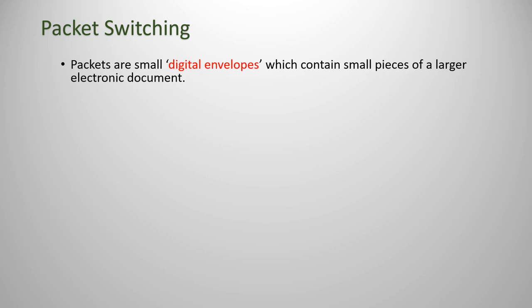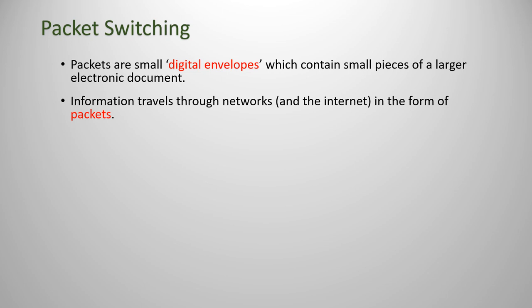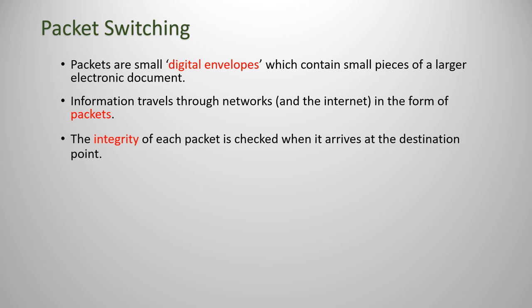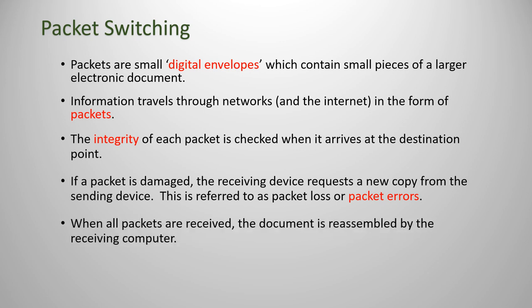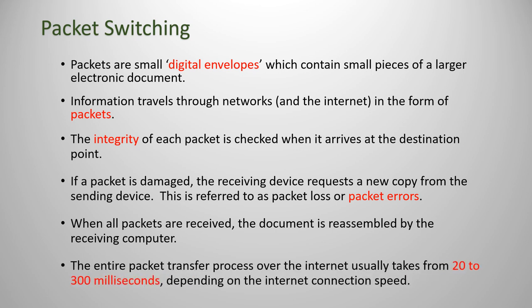Packets are small digital envelopes which contain pieces of a larger electronic document. Information travels through networks and the internet in the form of these packets. Each packet has its integrity checked when it arrives at its destination computer. If it's damaged, the receiving device will request a new copy from the sending device — this is referred to as packet loss or packet errors. When all packets are received, the document is reassembled by the receiving computer. This entire process commonly takes 20 to 300 milliseconds, depending on the speed of your internet connection.